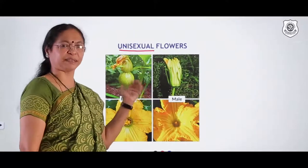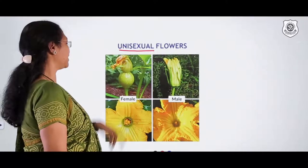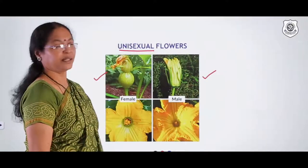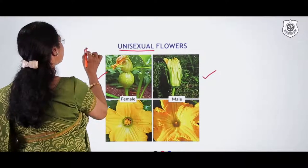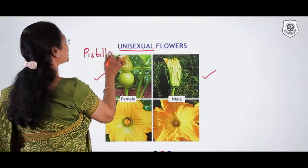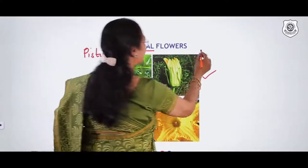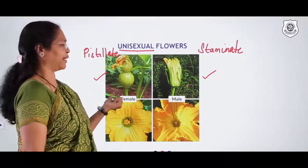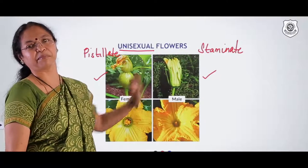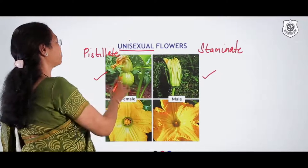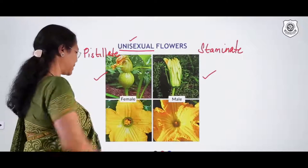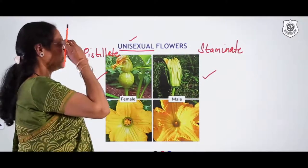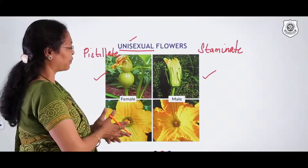A unisexual flower has only one sex organ — either the pistil or the stamen. If the pistil alone is present, it is called a pistillate flower (female flower). If only stamens are present, it is called a staminate flower (male flower). Very good examples of unisexual flowers are papaya and plants in the cucurbit family.